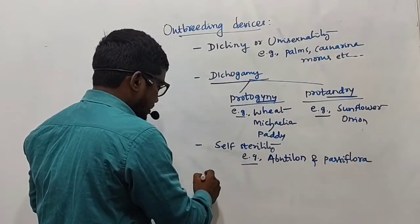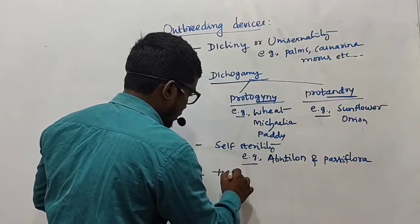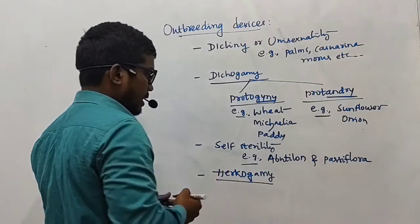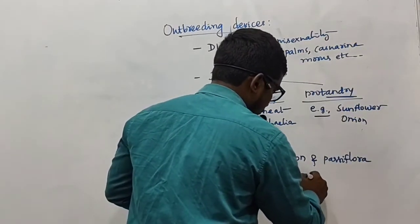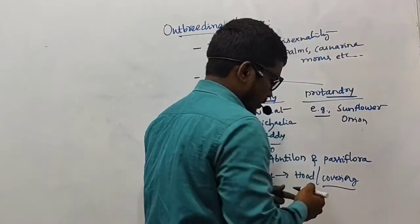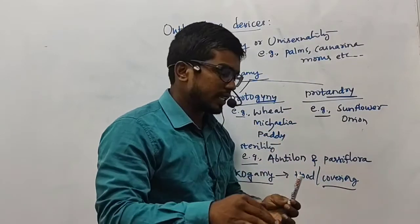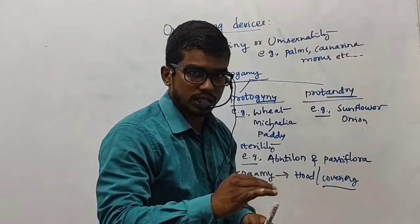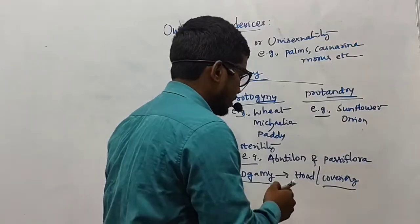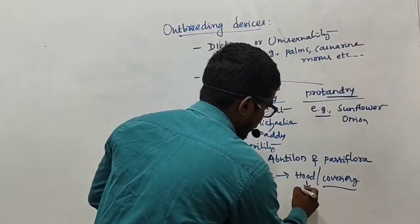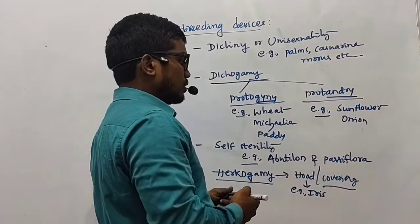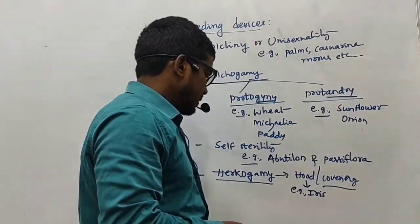Next, we also have harcogamy. In harcogamy, we find a hood or certain covering on the stigmatic surface. On the surface of the stigma, there is some covering, also referred to as a hood. This avoids self-pollination and contributes to cross-pollination. A best example here is iris.